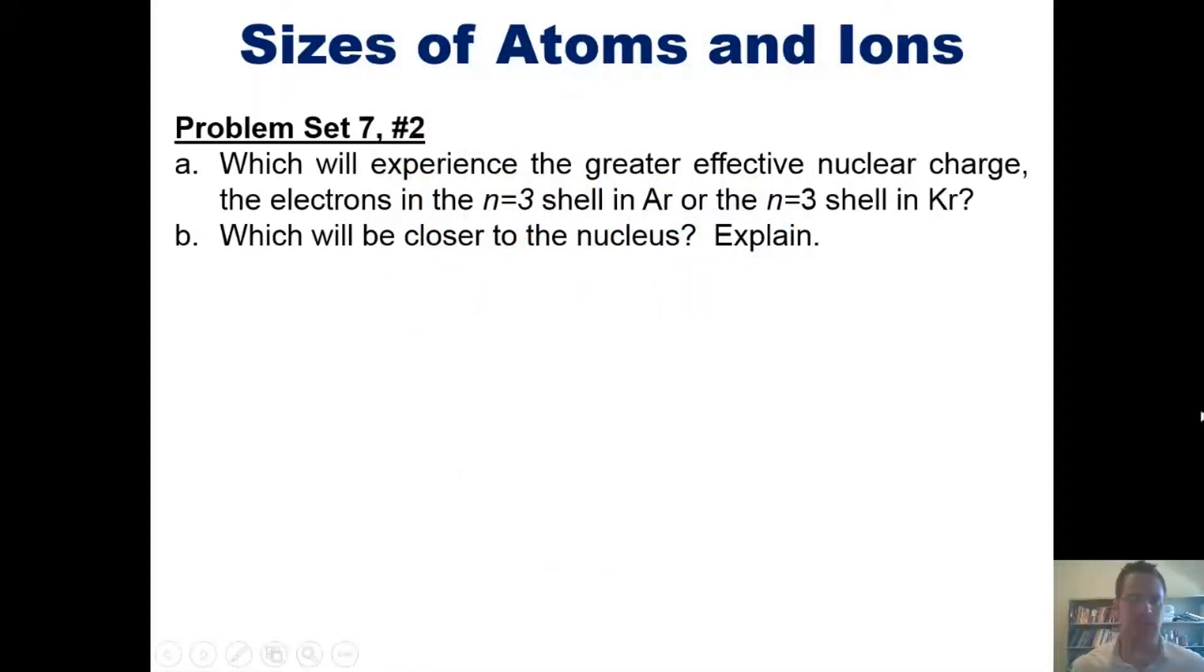That takes us to a set of lecture problems from the problem sets that I give my students in class. You'll remember from an earlier video that I asked and explained which will experience the greater Z effective, or effective nuclear charge: the electrons in the n equals 3 shell in argon or in the n equals 3 shell in krypton. That leads us to the second question: which of those electrons will be closer to the nucleus?